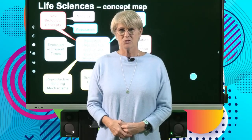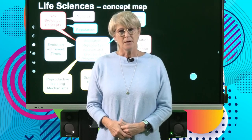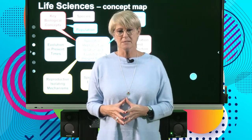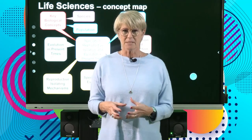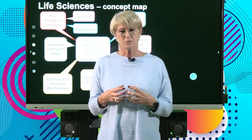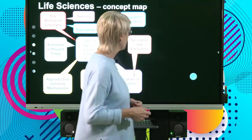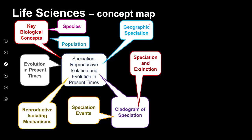Welcome back. Now what we're going to do is look at the actual process of speciation — we're going to see how the mechanism takes place, and we need to be able to describe or explain this process when we answer exam questions. We're going to look at geographic speciation, because usually there is a geographic barrier that occurs, and that is why we call it geographic speciation. A geographic barrier leads to the formation of new species — the process of speciation.